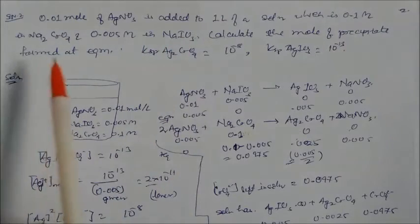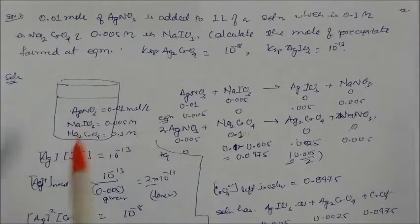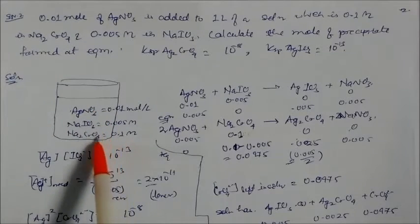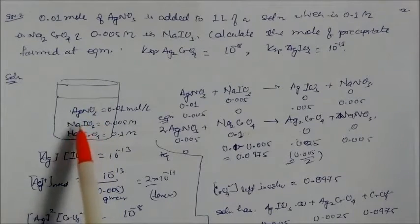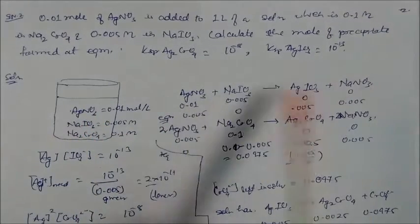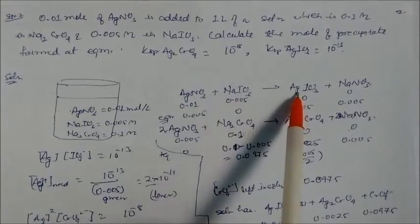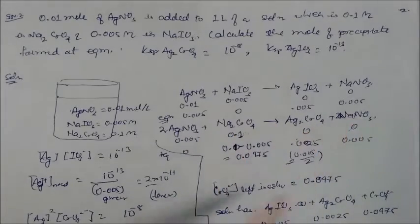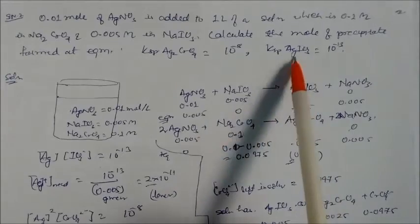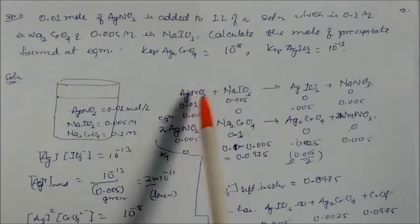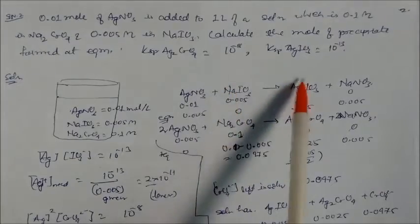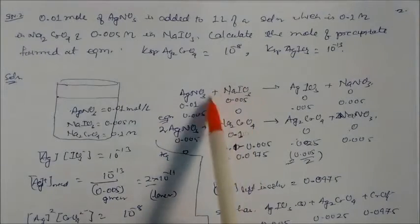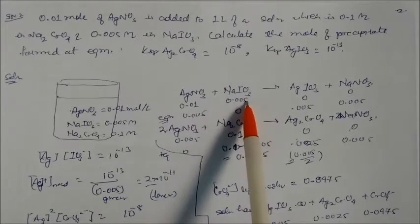Silver nitrate reacts with both sodium iodate and sodium chromate. Silver nitrate reacting with sodium iodate gives silver iodate and sodium nitrate; reacting with sodium chromate gives silver chromate. Since the solubility of silver iodate is lower, silver will first react with sodium iodate. This is because the Ksp value of silver iodate is lower.